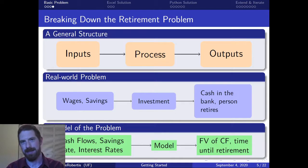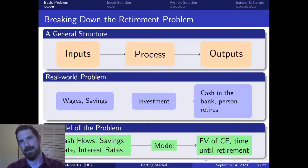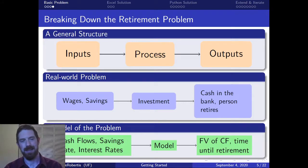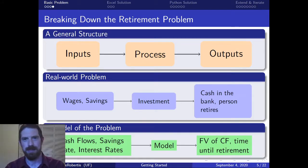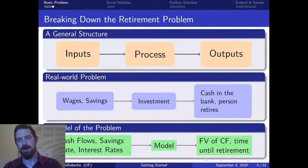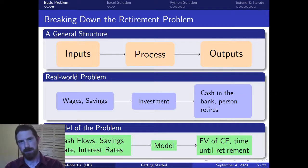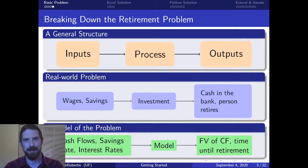In the model we're going to bring in the wages, the cash coming from wages involving the savings rate. We use the savings rate to determine how much cash is actually going to be coming into the investment portfolio each year, and we need the interest rate to determine how much is going to be earned on these investments. The model takes those inputs and converts them ultimately into the years until retirement. That's the basic model, and in the next video we're going to look at how we can implement this basic model in Excel. Thanks for listening.